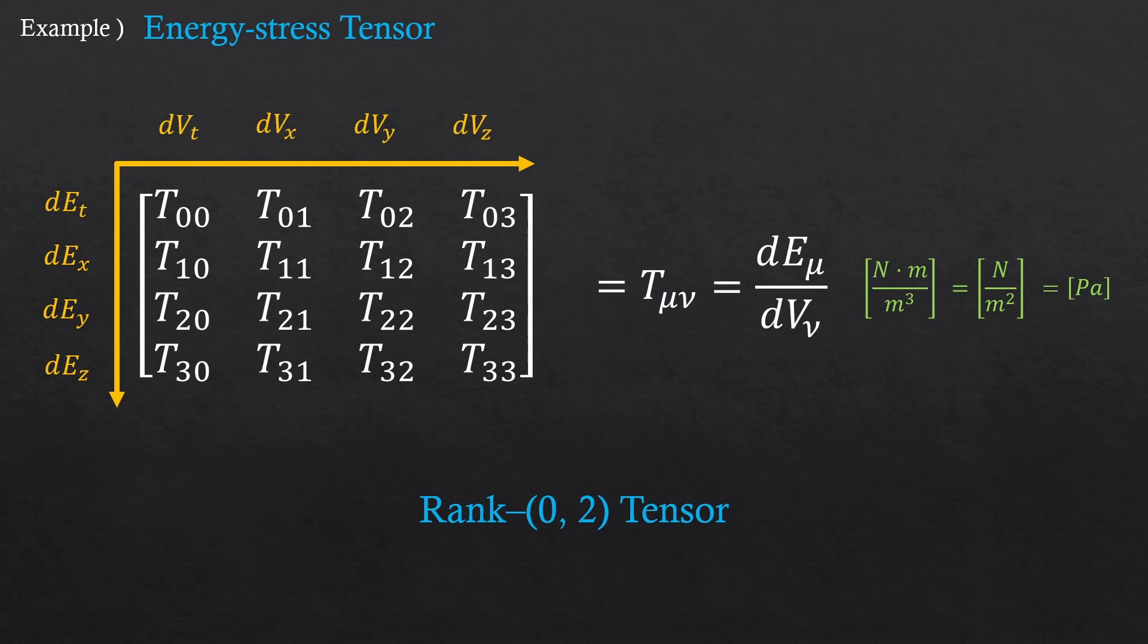So this is a rank 0-2 tensor and it describes stress with two physical quantities in 4D. As I said, the rank number doesn't have to do with the number of dimensions. By the way, if you think in this way, the previous stress tensor should have perhaps been called force stress tensor or something. It would make more sense, no? Anyway, so this was the energy stress tensor.